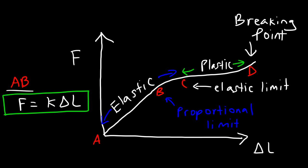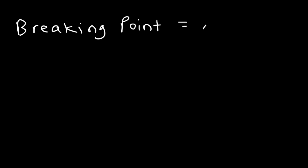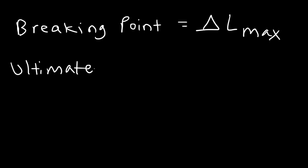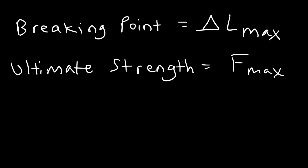The plastic region is between points C and D. If you apply too much force, you can reach the breaking point, at which point the solid could snap into two pieces — it can fracture. The ultimate strength of a material tells you the maximum force that can be applied without breaking the material. The breaking point represents the maximum elongation, or delta L max, and the ultimate strength is the maximum force at which an object can remain intact. Once you exceed that force, it's going to break into two parts.